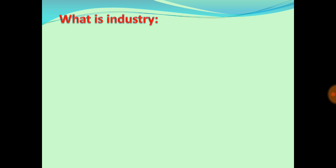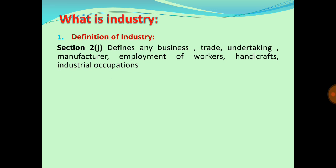Generally, when we use the word 'industry' we understand there is a particular premises or building where certain manufacturing processes are going on. But here we have to discuss what is the definition of industry as per the Industrial Dispute Act 1947. Section 2(z) of the Industrial Dispute Act 1947 defines industry as any business, trade, undertaking, manufacture, employment of workers, handicrafts, and industrial occupation.